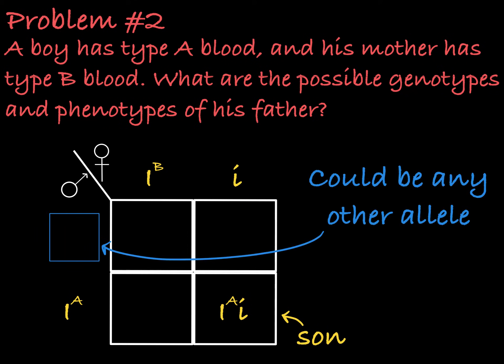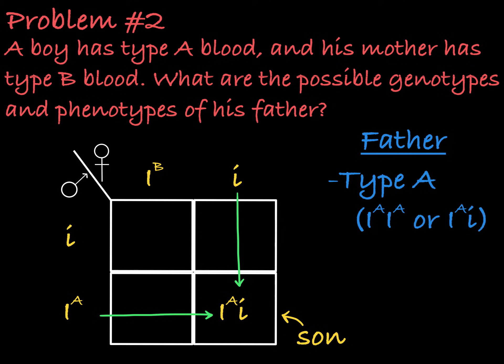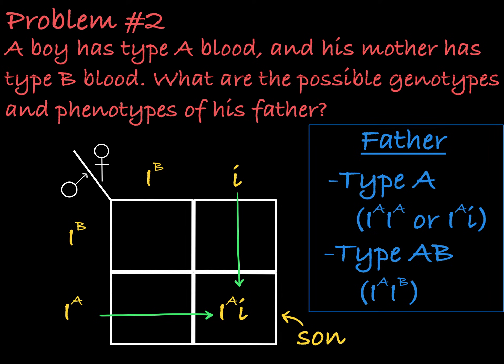His other allele could be any of the three options, which means he could be homozygous ia, heterozygous ia little i, or heterozygous iaib. So the father in this case could be type A or type AB.